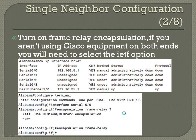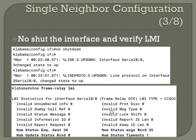Still in the interface configuration, do a 'no shutdown' and watch the interface come up — you'll see the line protocol come up as well. Then do a 'show frame-relay lmi'. The main thing to look at is the number of LMI messages sent and received on both ends — those two numbers added together should be approximately equal to the other two numbers added together. They don't have to be exact, just close.